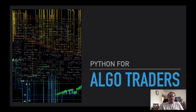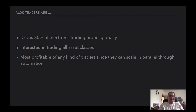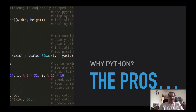For the more advanced traders, algo trading. Here are some more stats: 80% of all orders are driven electronically. There's a huge interest in trading in all asset classes using this methodology. It's probably the most profitable of any kind of trading, since a lot of these traders can scale in parallel through automation.